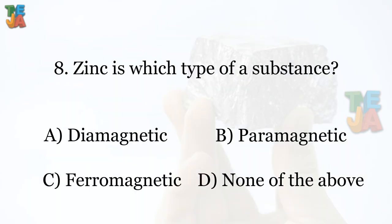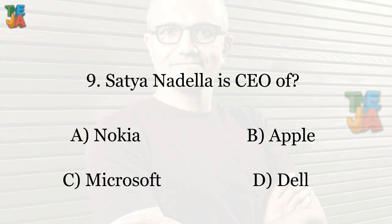Question 8: Zinc is which type of substance? Answer: Diamagnetic.